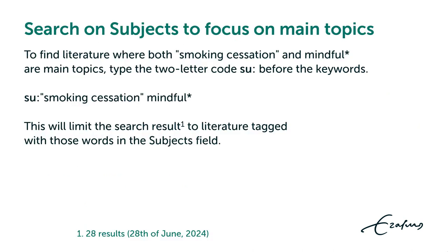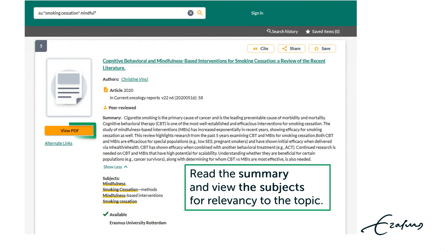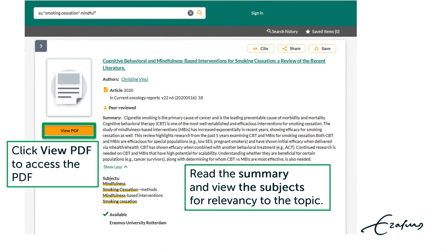Subjects describe the main topics discussed in the literature. To find literature where both 'smoking cessation' and 'mindful' are main topics, you can adjust the search query. Type the two-letter code 'su:' before the keywords of the search query. This limits the search result to literature tagged with those words in the subjects field. Read the summary and check the subjects for relevancy to your research topic.